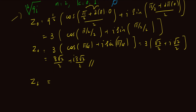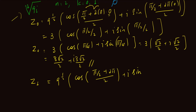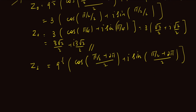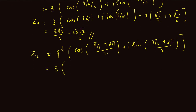For z_1, the same formula: 9 to the power of 1 over 2, times cosine of the principal angle pi over 2 plus 2 pi times k, where k is now 1, divided by 2, plus i times sine of pi over 2 plus 2 pi times 1 divided by 2. Simplifying, the square root of 9 is 3, and the angle becomes pi over 2 plus 2 pi divided by 2, which gives 5 pi over 4. So we have 3 times cosine of 5 pi over 4 plus i times sine of 5 pi over 4.